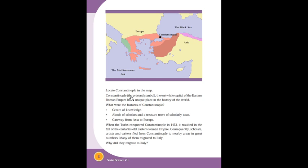Constantinople, present name Istanbul, as the capital of the Eastern Roman Empire, has a unique place in the history of the world. Its features included being a center of knowledge, a board of scholars, a treasure trove of scholarly work, and a gateway from Asia to Europe for trade.